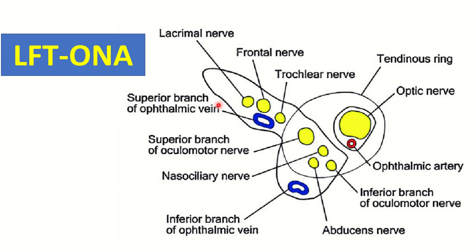First we can see the name of these nerves: lacrimal nerve, then frontal nerve, trochlear nerve, then the superior and inferior branches of the oculomotor nerve, then abducent and nasociliary nerve. The mnemonic is: L for lacrimal, F for frontal, T for trochlear, O for oculomotor, N for nasociliary, and A for abducent.